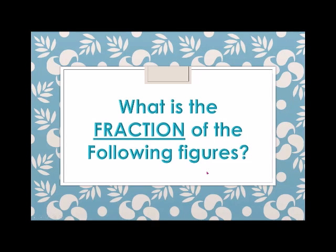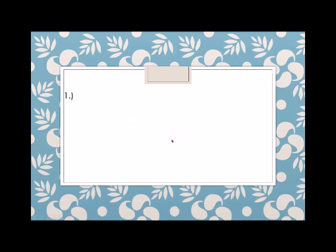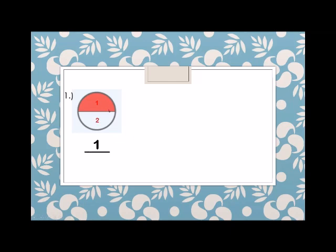What is the fraction of the following figures? Let's do some examples. Number 1: we have a circle divided into 2 and we have a shaded part. How many shaded parts do we have? 1. Therefore, the top number — the numerator — is 1. And how many parts is the circle? 1 and 2. Therefore, the denominator is 2. So this figure is 1 half or 1 over 2.